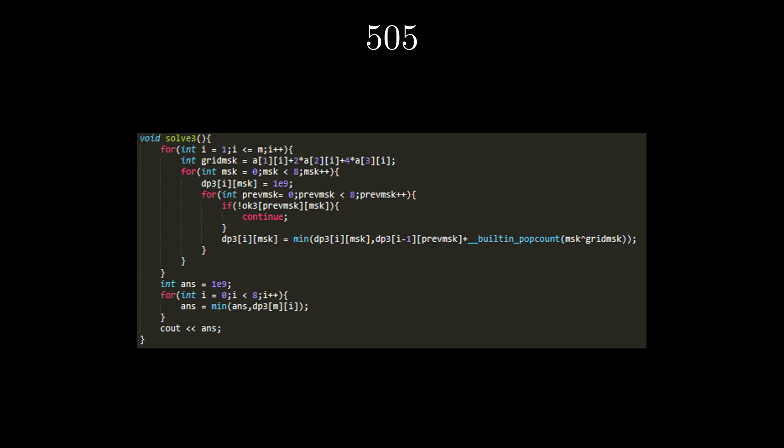Built-in popcount is a C++ function which can calculate the number of set bits in a number. Now, the answer is simply the minimum of dp3[m][i], where i denotes all possible masks.